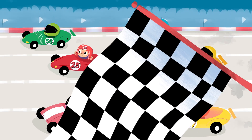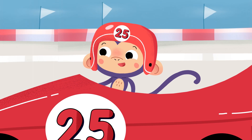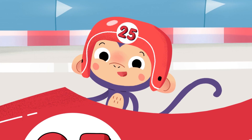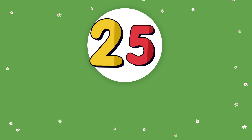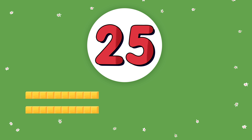On your mark, get set, go! Do you like that racing helmet? See the number? It's number 25. We can look at the digit in the 10s place first to help compare numbers. How many 10s does my number have? 25 has two 10s. It also has five 1s.